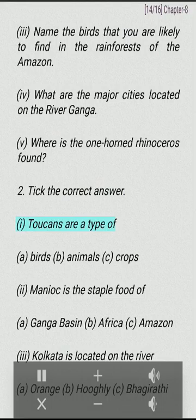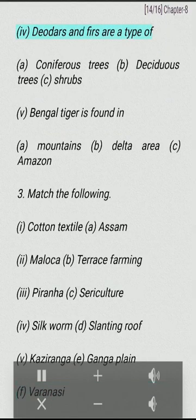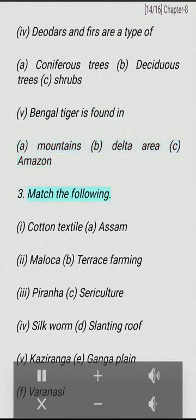Tick the correct answer: (I) Toucans are a type of: A. Birds, B. Animals, C. Crops. (II) Manioc is the staple food of: A. Ganga basin, B. Africa, C. Amazon. (III) Kolkata is located on the river: A. Orange, B. Hoogli, C. Bhagirathi. (IV) Deodars and firs are a type of: A. Coniferous trees, B. Deciduous trees, C. Shrubs. (V) Bengal tiger is found in: A. Mountains, B. Delta area, C. Amazon.